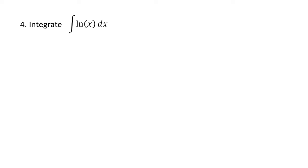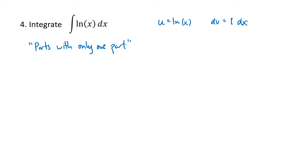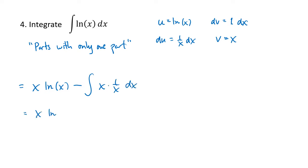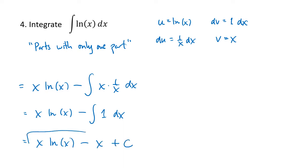This is a different kind of example. On the face of it, it doesn't look like an integration by parts problem — we only have one function, just the natural log of x. But this is an example using integration by parts that we sometimes call 'parts with only one part.' Our u is the natural log of x, and our dv is just 1 dx. Taking the derivative of natural log gives us 1 over x dx, and v is x. This gives us u times v — x times natural log of x — minus the integral of x times 1 over x dx, which is the antiderivative of 1 with respect to x — just x. So this turns into x natural log of x minus x, plus c.